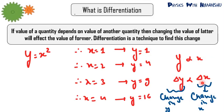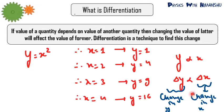Remember that del x is basically change in x, and del y is basically change in y. Del y and del x represent change. If the change is very small, then we write del x as dx and del y as dy.